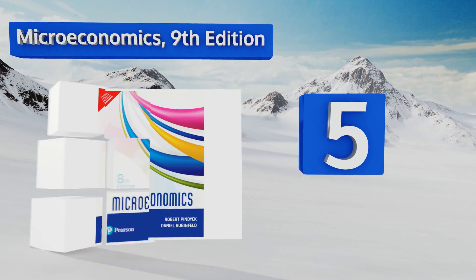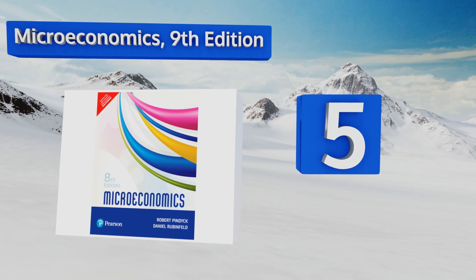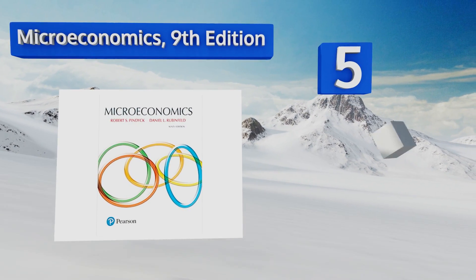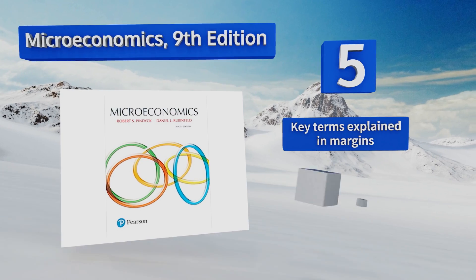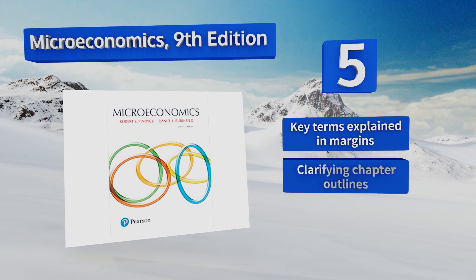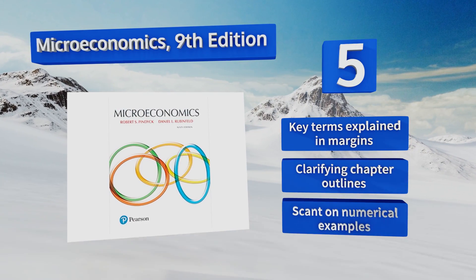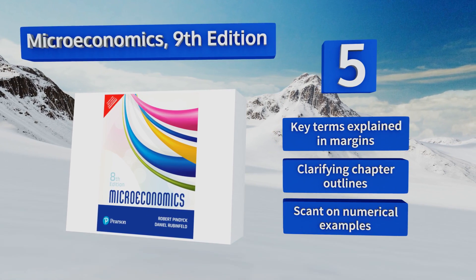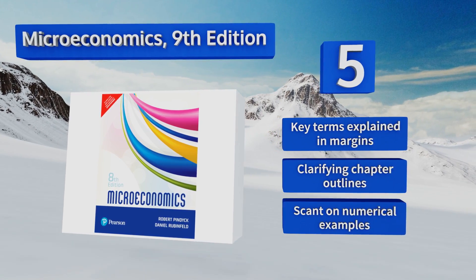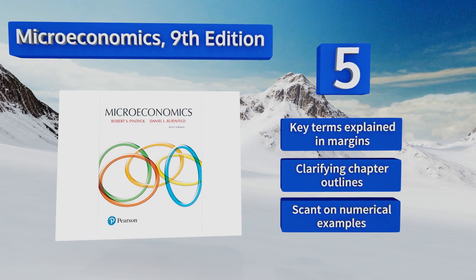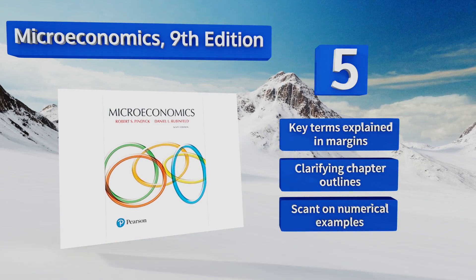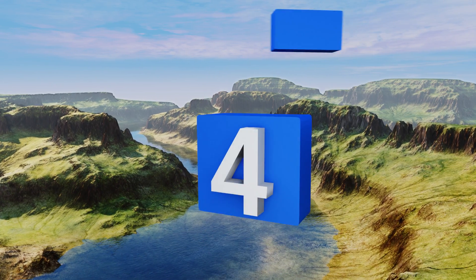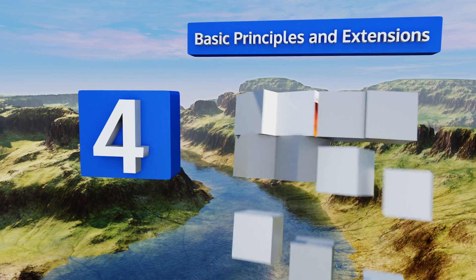Halfway up our list at number five, for insight into what drives public policy formation and managerial decision making, you may want to nab Microeconomics, Ninth Edition. Its extended examples, clear visuals, and deft handling of modern topics make it a wonderful tool for absorbing the fundamentals. It features key terms explained in the margins and clarifying chapter outlines, but it's scant on numerical examples.